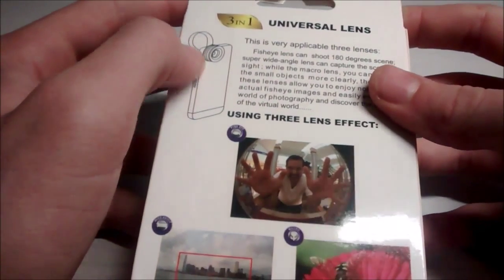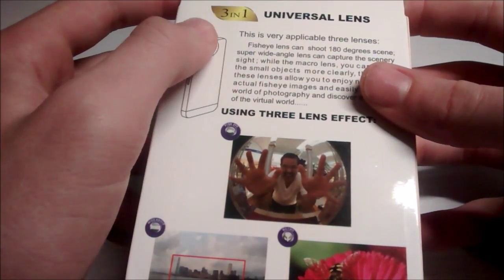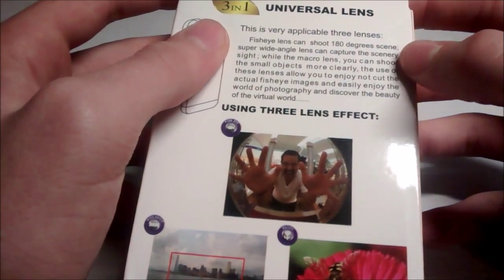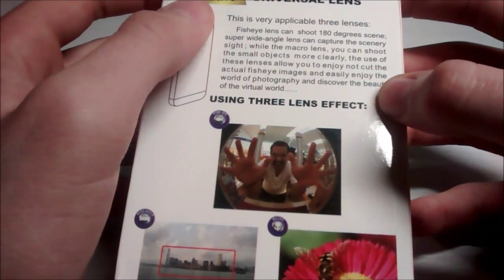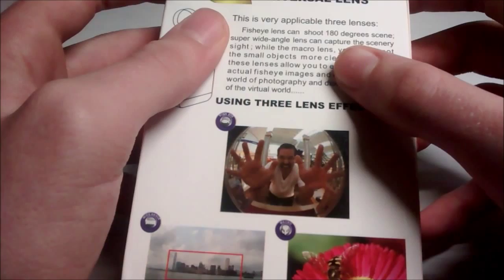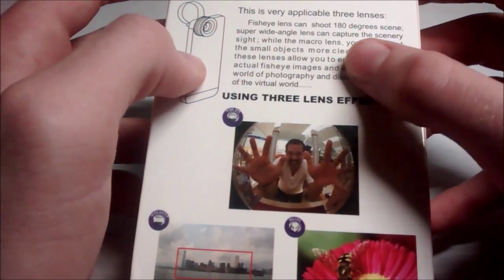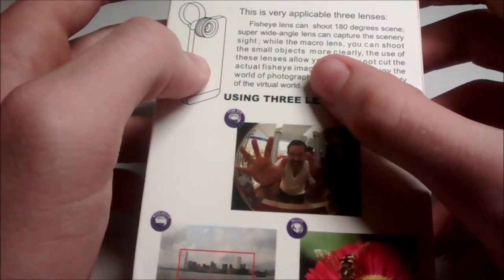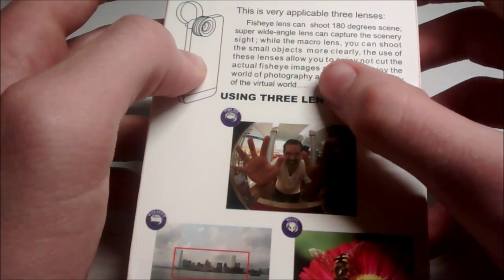On the back here it says 3-in-1 universal lens and then it talks about each individual lens. There's the fisheye lens which can shoot 180 degree scenes, the super wide angle lens can capture scenery sights, while the macro lens lets you shoot small objects more clearly.